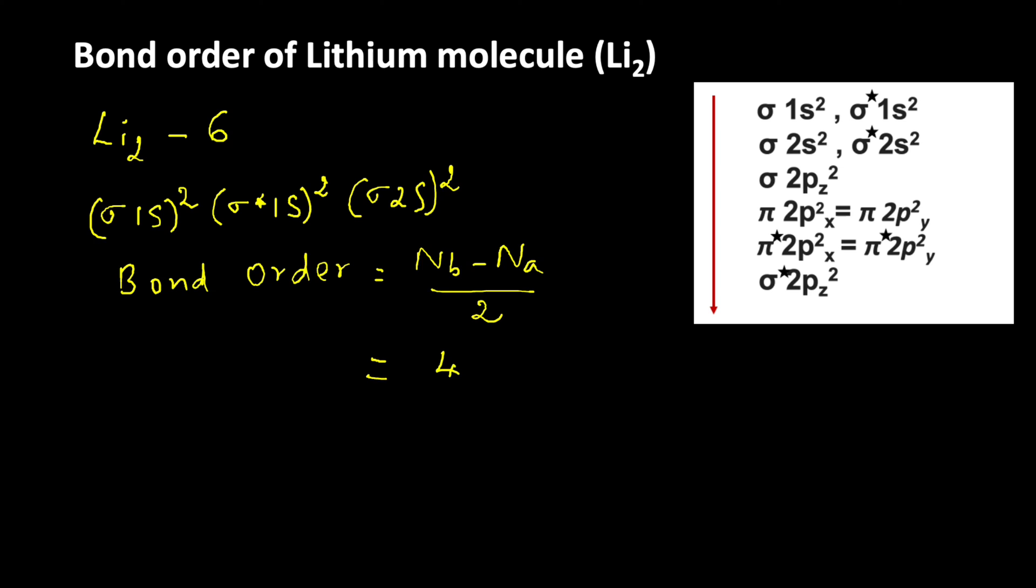So 4 minus 2 by 2: 2 by 2, which equals 1. That means the bond order of lithium molecule is 1. Lithium molecule is very stable and it exists.